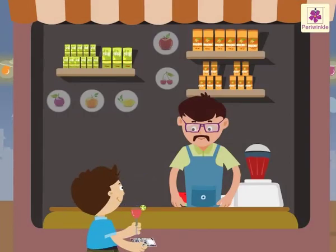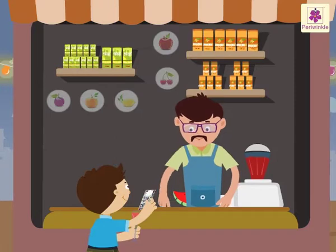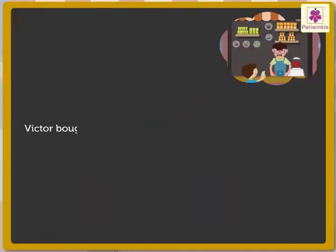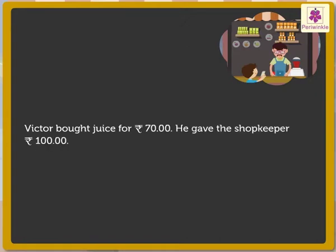Now Victor visits another stall to buy some juice. He bought juice for 70 rupees. He gave the shopkeeper 100 rupees. How many rupees did he get back?